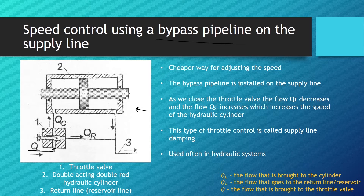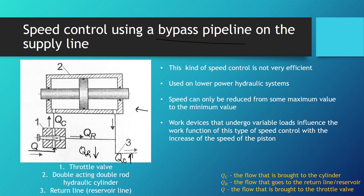This type of speed control is used very often in hydraulic systems. The smaller the QR flow is, the bigger the QC flow is, and the bigger the speed of the hydraulic cylinder. Unfortunately, this kind of speed control is not very efficient — a great deal of the input energy is lost because of the dampening system, and it is usually used on lower power hydraulic systems.